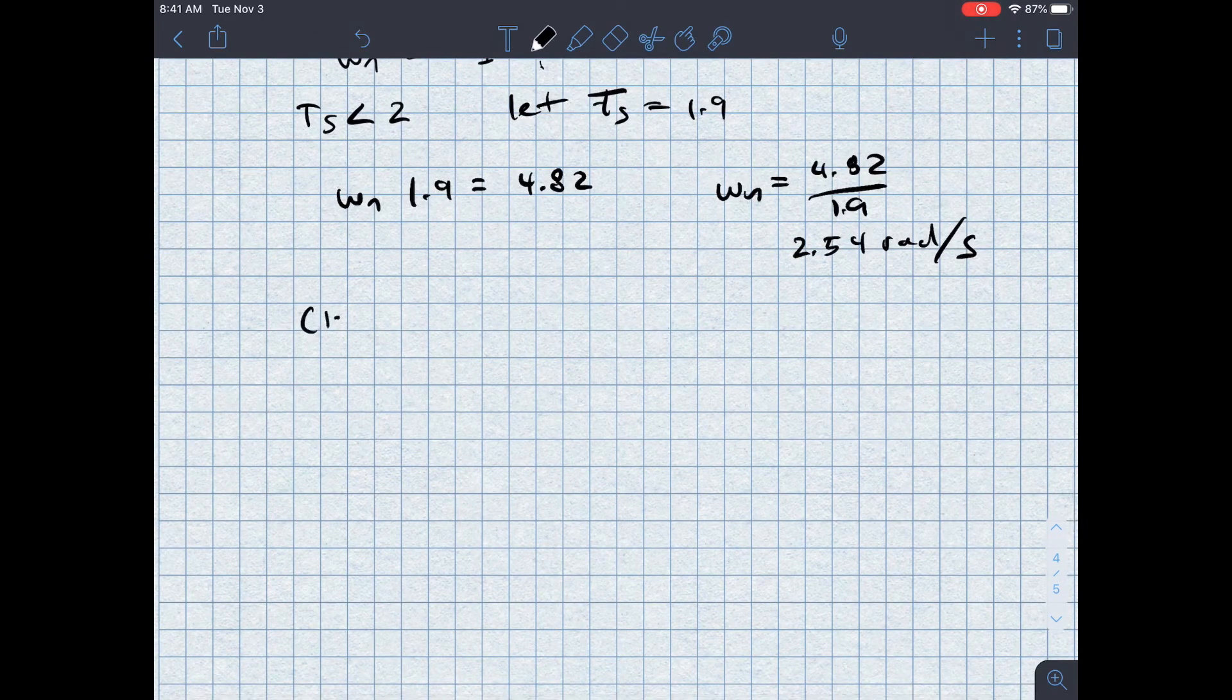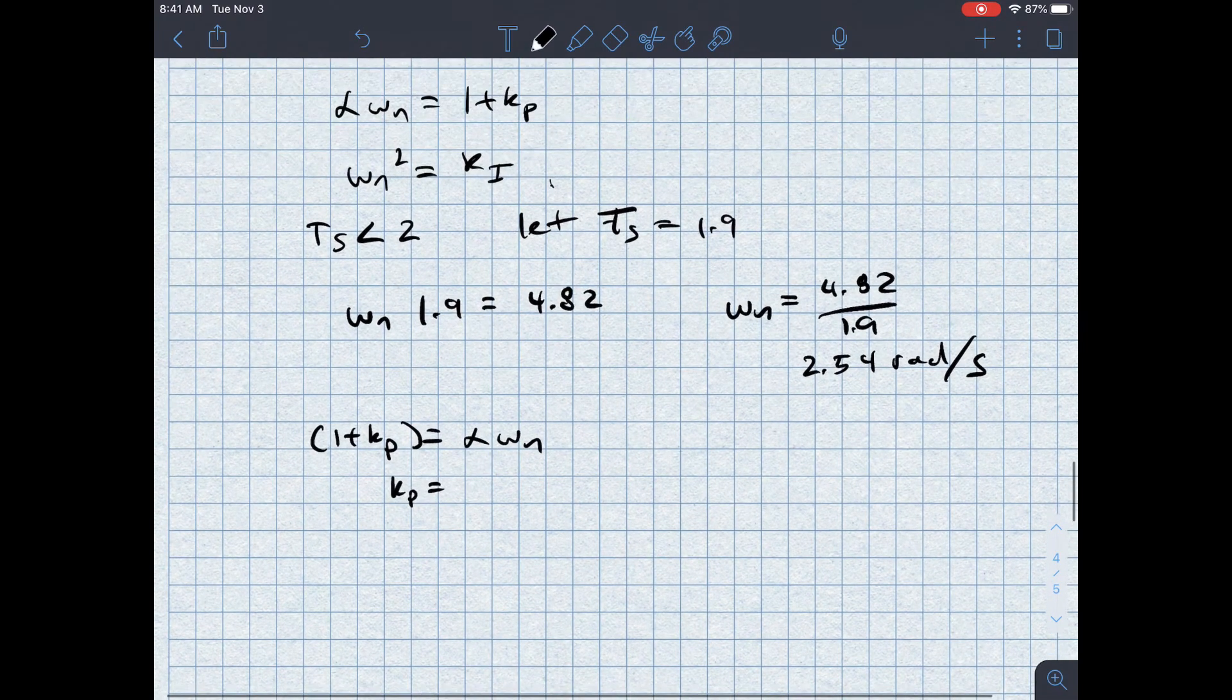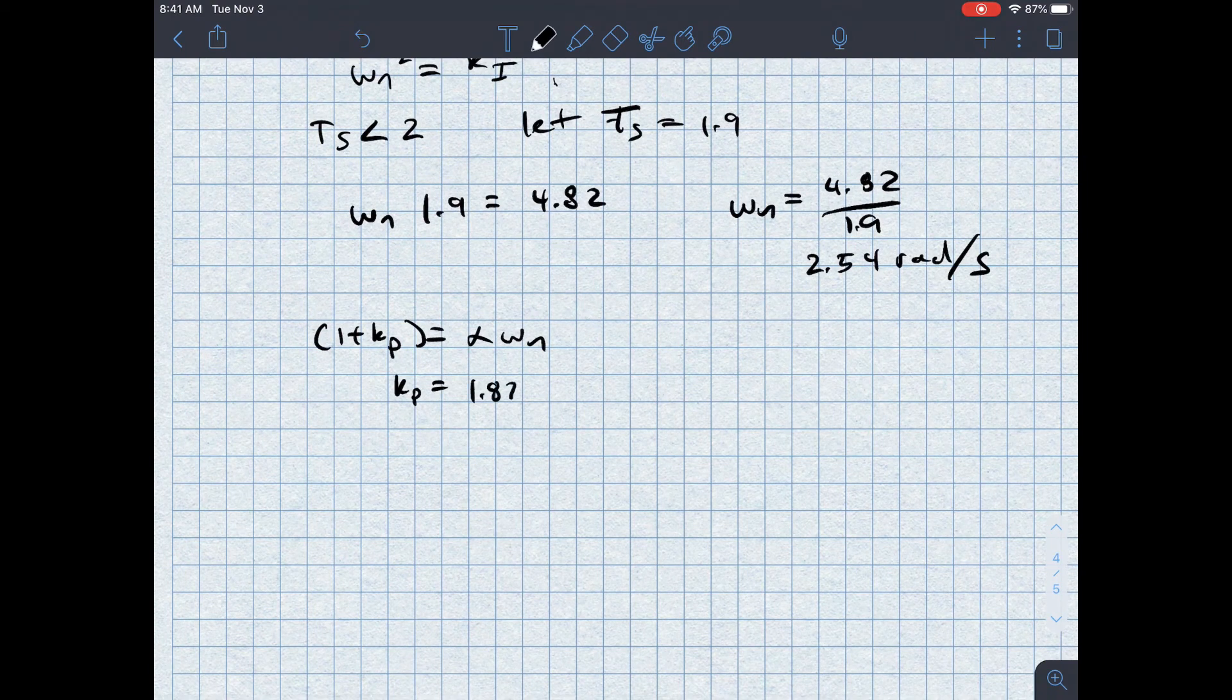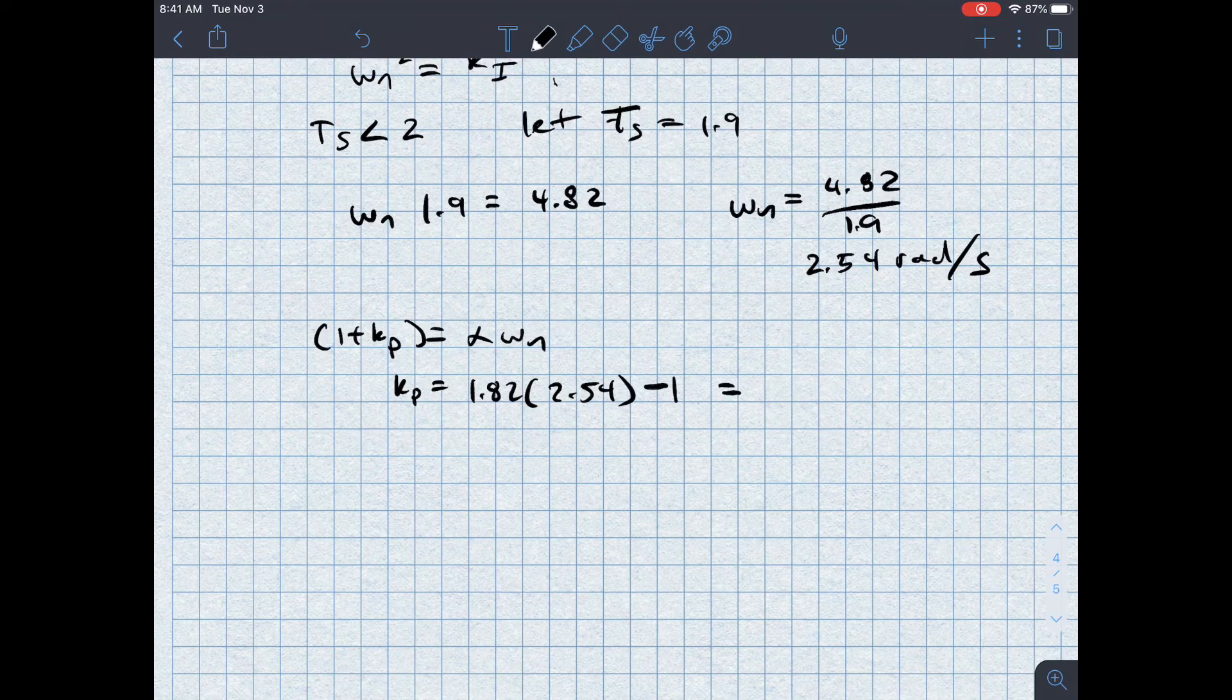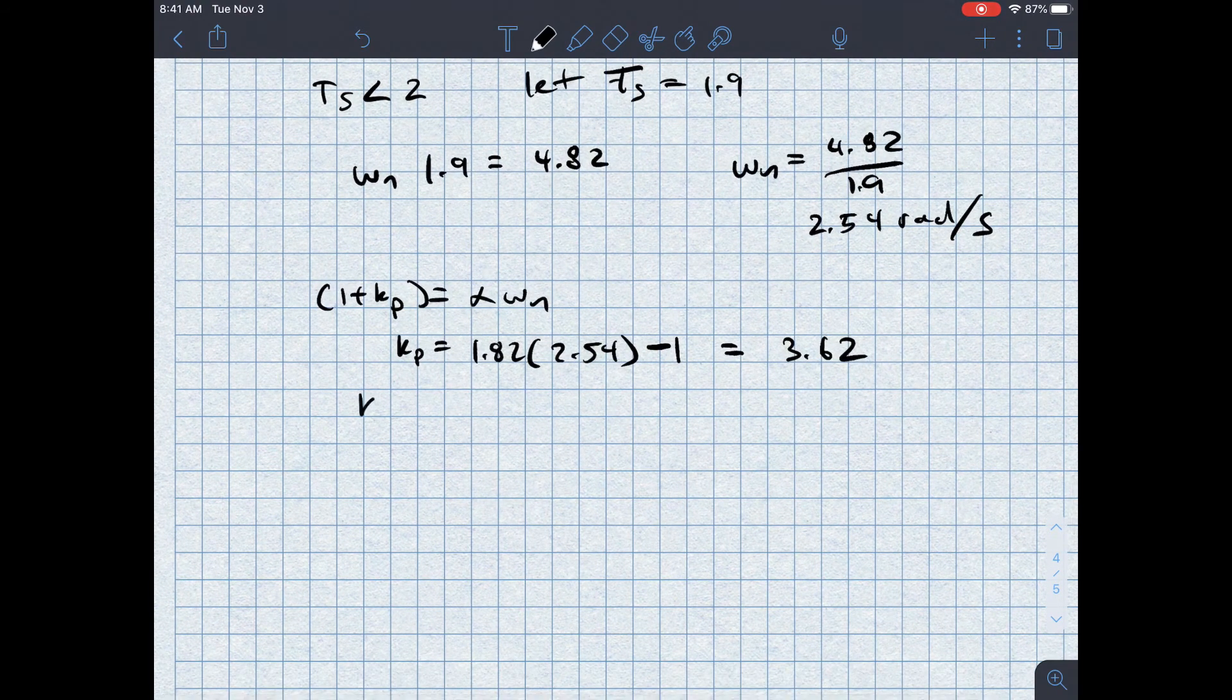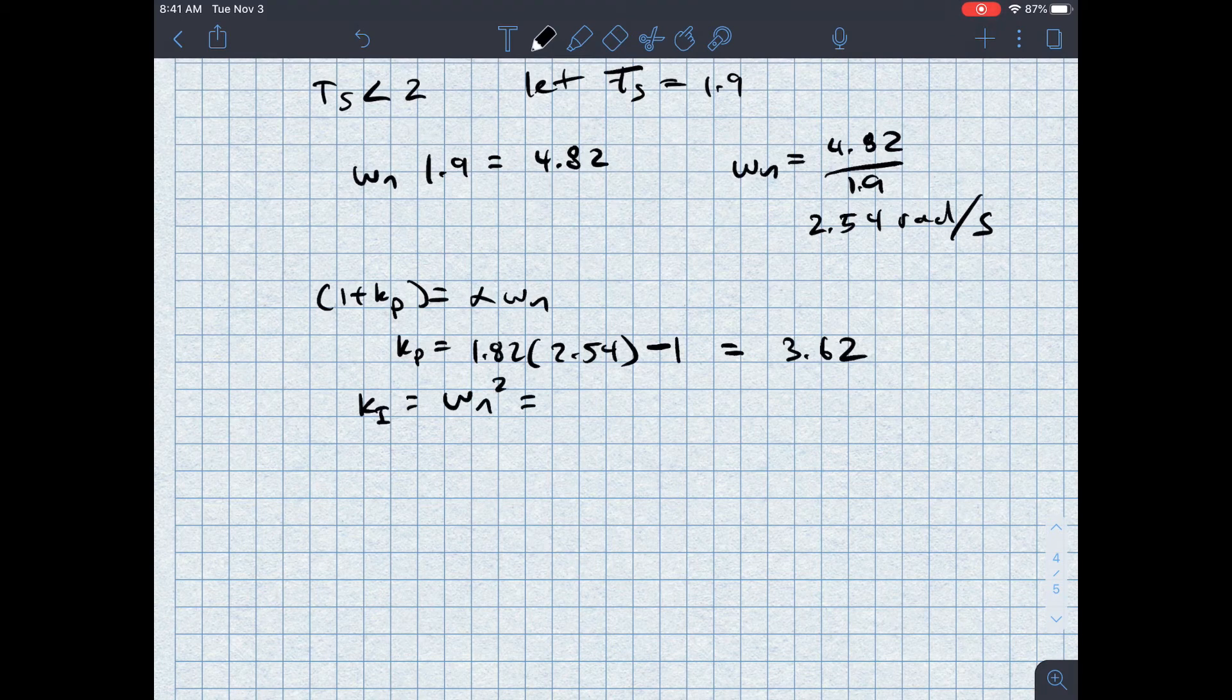So then, going back, I've got 1 plus KP has to equal to alpha omega N. KP is equal to alpha omega N, which is 1.82 times 2.54 minus 1. That value is equal to 3.62. And I also know that KI is equal to omega N squared, which is equal to 2.54 squared, which is 6.45. So now I have values for KP and KI.